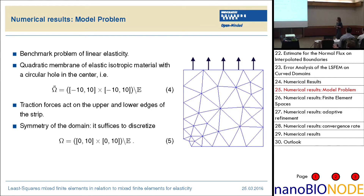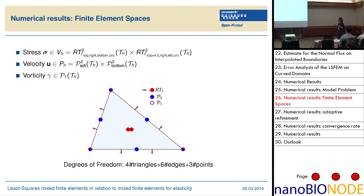Here's a benchmark problem to close — to get it applied, because the previous problem was only a theoretical case with vanishing forces. This is a benchmark problem: normally you have a bigger plate, but you can take only a quarter of your domain, and you have some traction force on the top. This is a slide recalling the degrees of freedom when you use quadratic Raviart-Thomas elements for the stress tensor, quadratic elements for the displacement, and linear for the vorticity.